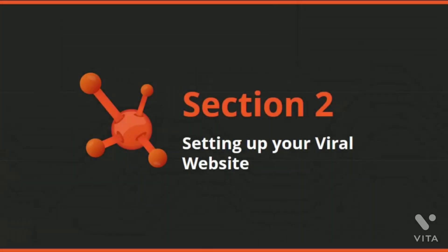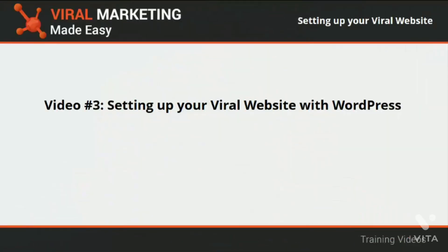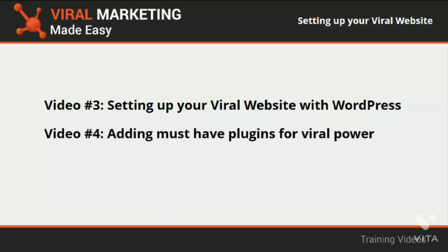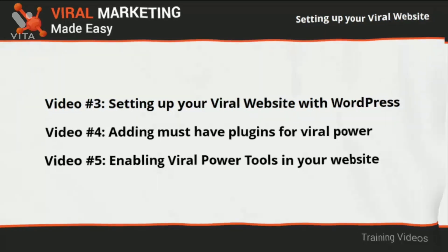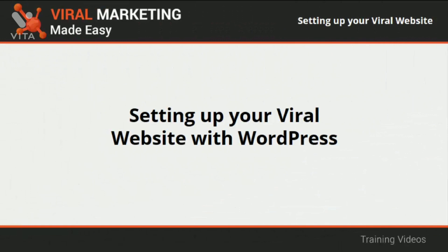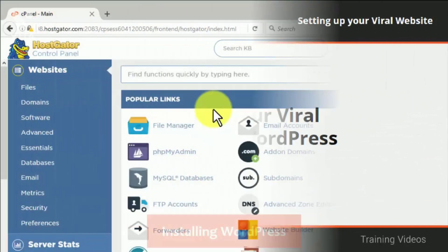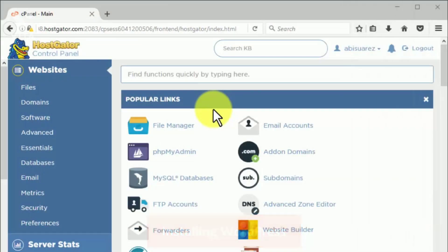Welcome to section 2 of our viral marketing video training. In this section we will talk about setting up your viral website with WordPress, adding must-have plugins for viral power, and enabling viral power tools in your website. Setting up your viral website with WordPress: installing WordPress is simple — hosting services have made the process as easy as possible. If HostGator is your hosting service of choice, go to the software area and click on Quick Install, then click on WordPress.